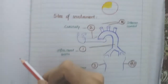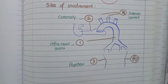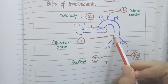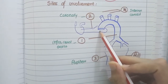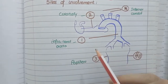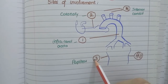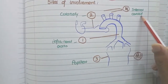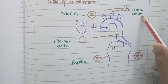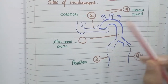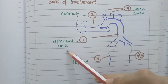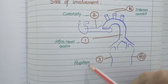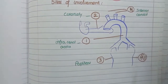Regarding the site of involvement of atherosclerotic plaques, the infrarenal abdominal aorta is the most common site. Second is the coronary arteries, followed by popliteal arteries (arteries of the leg), and finally the internal carotid arteries. So the order is: infrarenal abdominal aorta, coronary arteries, popliteal arteries, and carotid arteries.